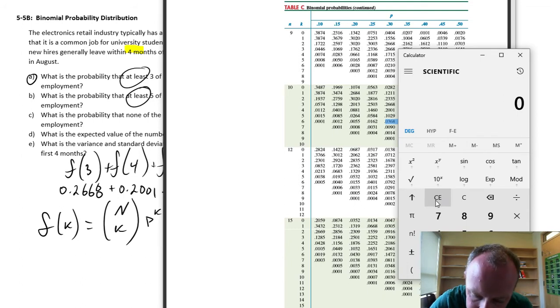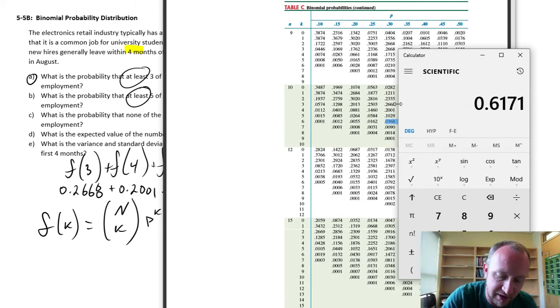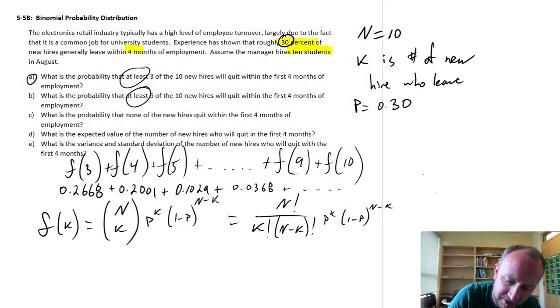So, here is starting with 3, so .2668, plus .2001, plus .1029, plus .0368, plus .009, plus .0014, and plus .0001, and the next one is 0. So, .617 will be our final answer.